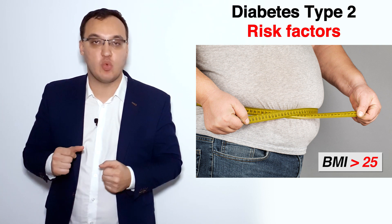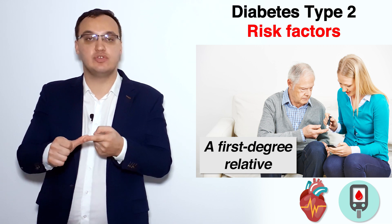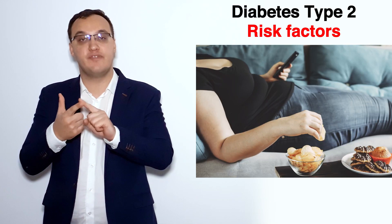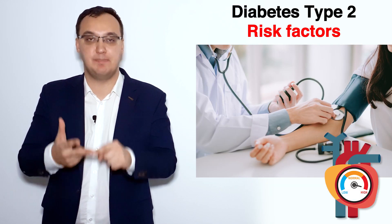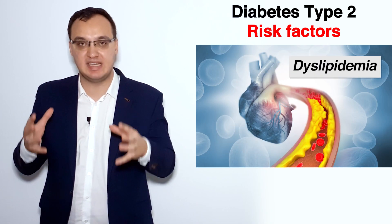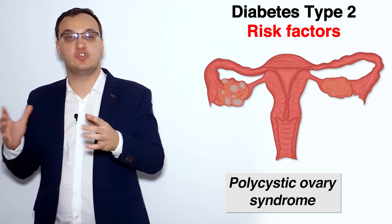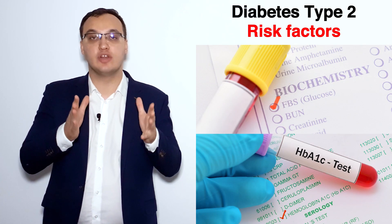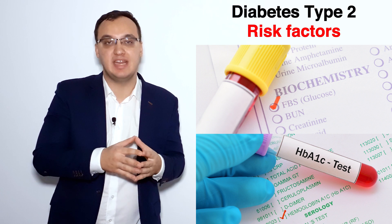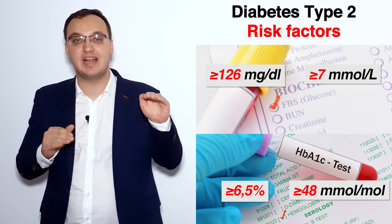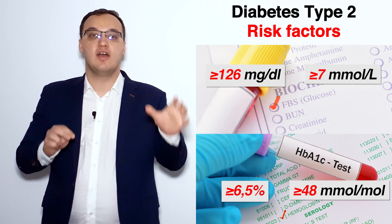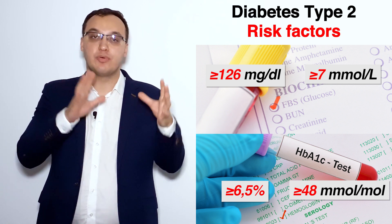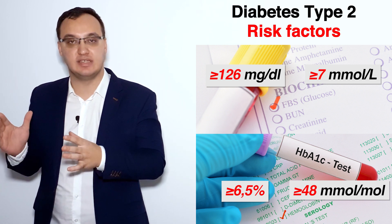Let's name the risk factors once again: first relatives with cardiovascular disease or diabetes, living a sedentary lifestyle, hypertension, dyslipidemia, and polycystic ovary syndrome. These patients need to be checked for fasting plasma glucose and hemoglobin A1c. There are some cutoff values, which we dealt with in another video, above which levels we call it pre-diabetes and diabetes.